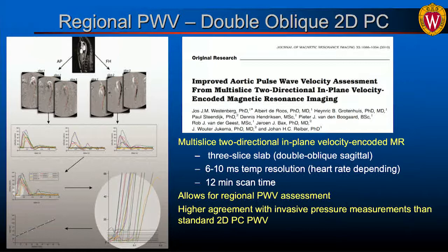A study from the Netherlands by Joe Westenberg used 2D phase contrast encoding with in-plane two-direction velocity encoding, imaging three slices with extremely high temporal resolution of 6 to 10 milliseconds. This resulted in 12-minute scan times — four minutes per slice — but allowed for a very distinct regional pulse wave velocity assessment. He found this measure had higher agreement with invasive pressure measurements than standard 2D phase contrast pulse wave velocity measurements.